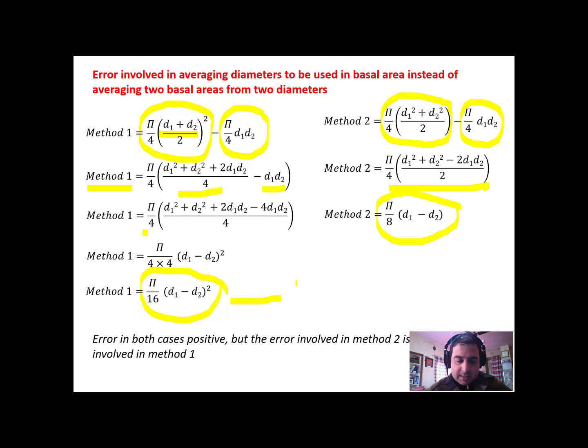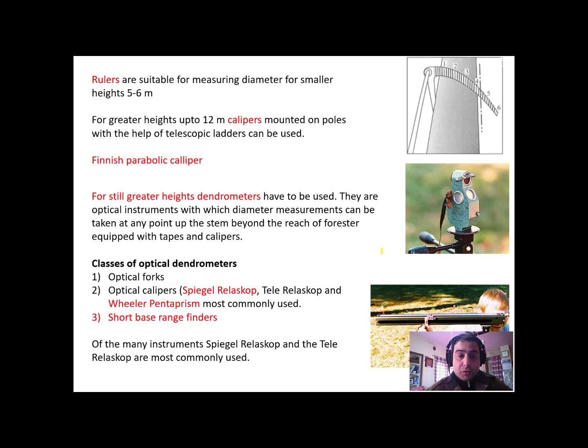Now, we have two terms, this is one, and this equation is two. We can clearly see and conclude that pi by 16 d1 minus d2 is very small than pi by 8 d1 minus d2, means the error involved in the first method where we first average the two diameters, then estimate the basal area is certainly going to be the best one. The error is double in case of method 2.